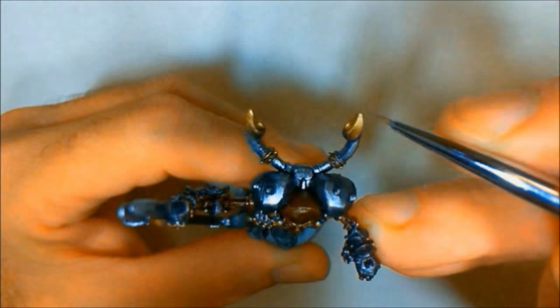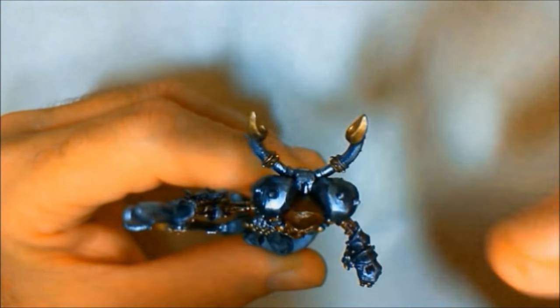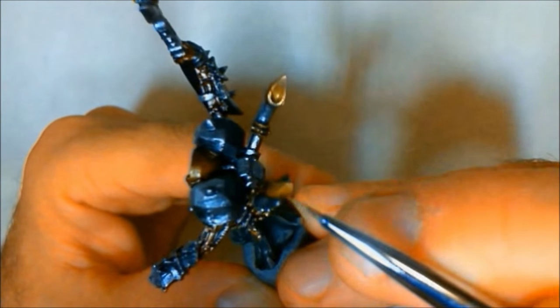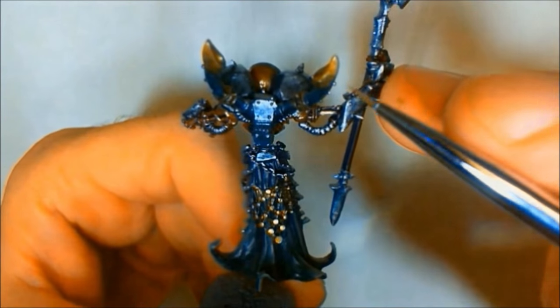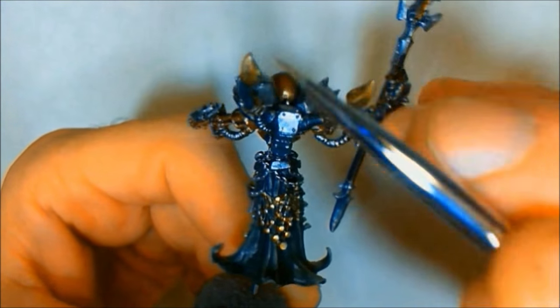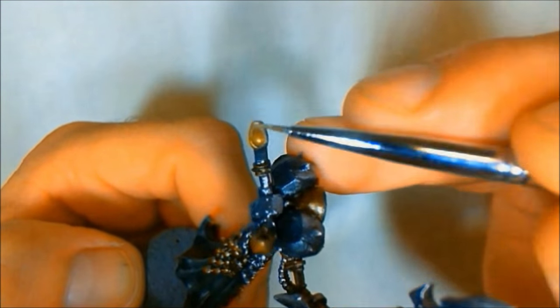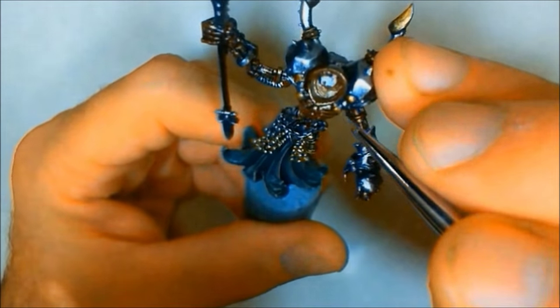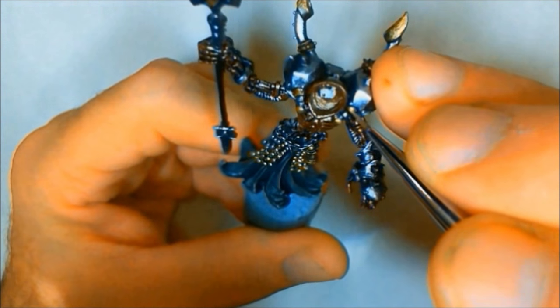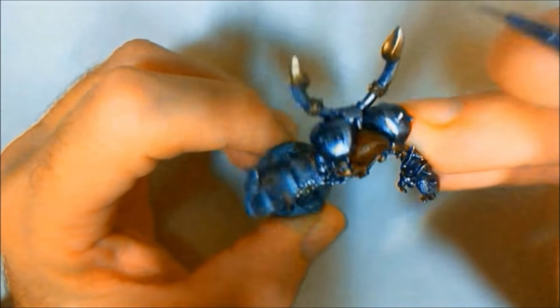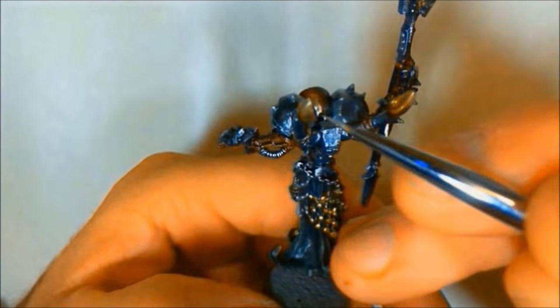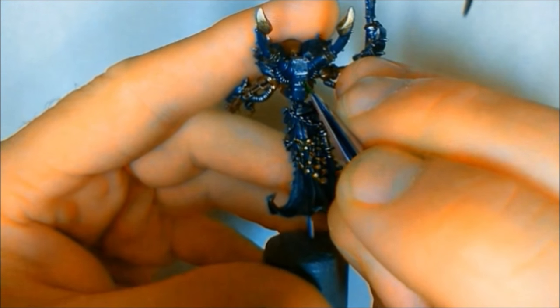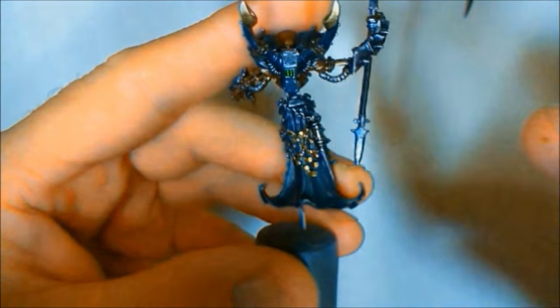But you can see how it's coming up. Now I'm going in with the Vallejo Model Air Gold. It makes a great highlight for bronze or brass, just give it that final pop. I didn't do it on the cowl because it was a different color. It was the rust, so I'll use some other colors on it.